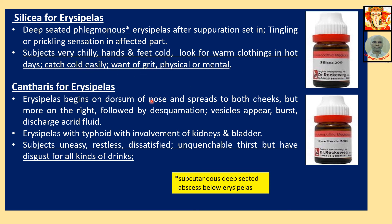Cantharis for Erysipelas: Erysipelas begins on the dorsal aspect, spreads to both sides of the cheek but more on the right. Followed by desquamation — meaning peeling of the skin. Vesicles appear, burst, and discharge an apricot-colored fluid. Associated with typhoid symptoms with involvement of kidney and blood. Subjects uneasy, restless, dissatisfied, with unquenchable thirst but disgust for all kinds of drinks.